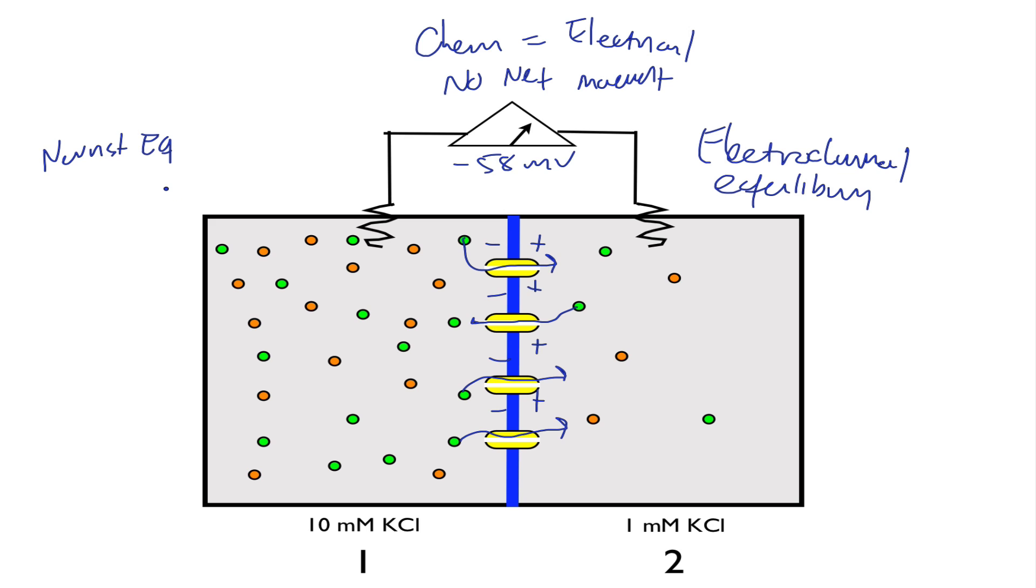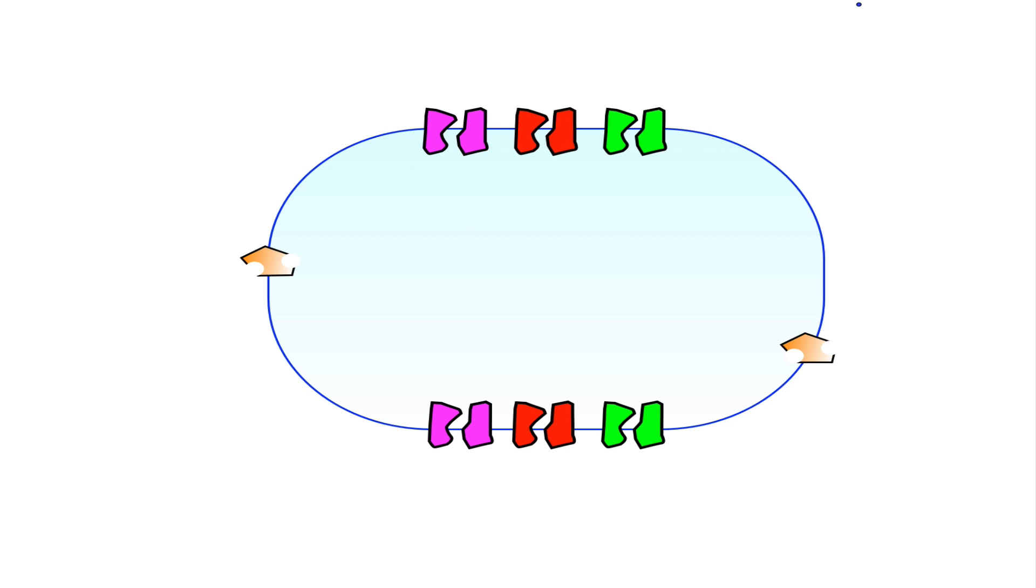But what about real cells? Aren't there multiple ions involved? How do we figure out the membrane potential there? Real cells are a little more complicated. The main difference is that a cell is permeable to more than one ion by virtue of having several different ion channels, sodium, potassium, and chloride in this case. But still, amazingly, the process of setting up a membrane potential in a cell is the same as we saw in the two compartment model. You can use your knowledge of the two compartment model to conceptualize membrane potential in real cells.